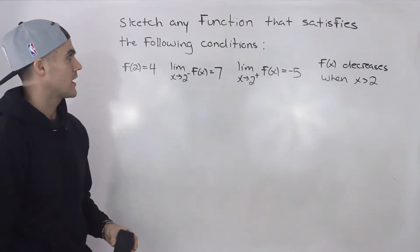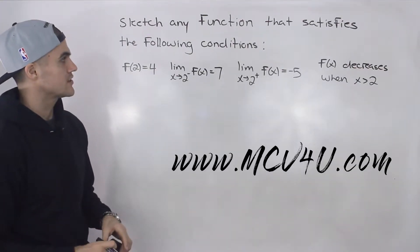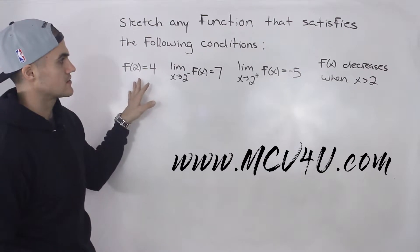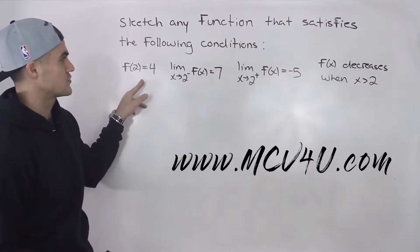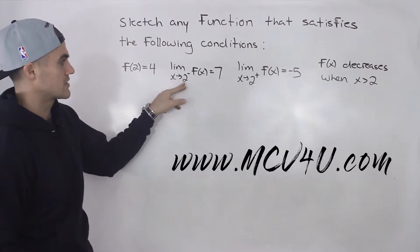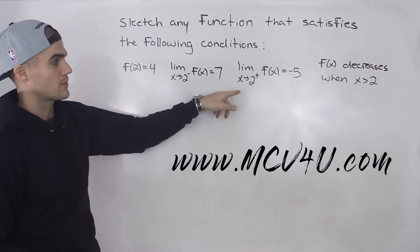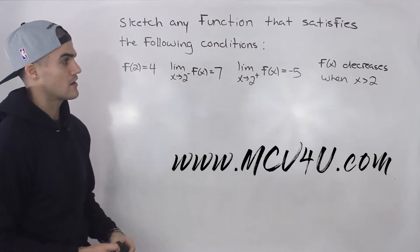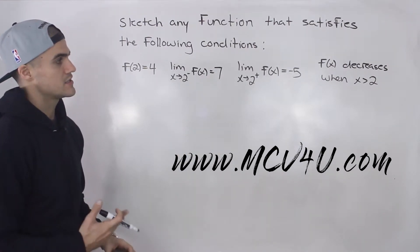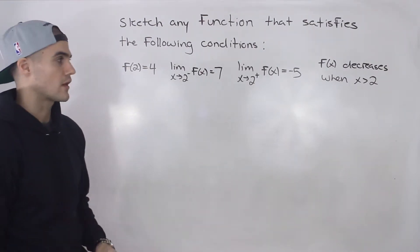Welcome back, everybody. Moving on to another question, we're going to sketch a function that satisfies these four conditions. f(2) equals 4. Limit as x approaches 2 from the negative side equals 7. Limit as x approaches 2 from the positive side equals negative 5. And f(x) is decreasing when x is greater than 2.